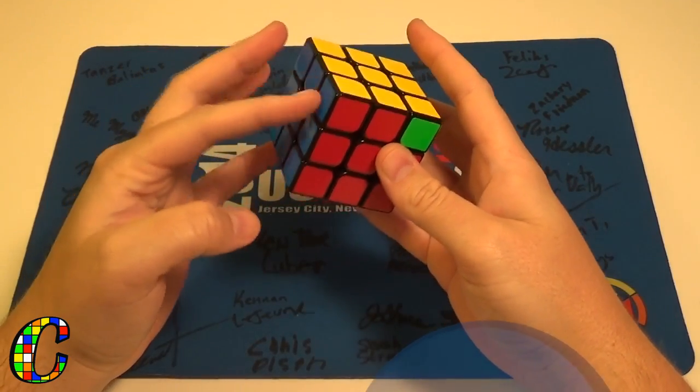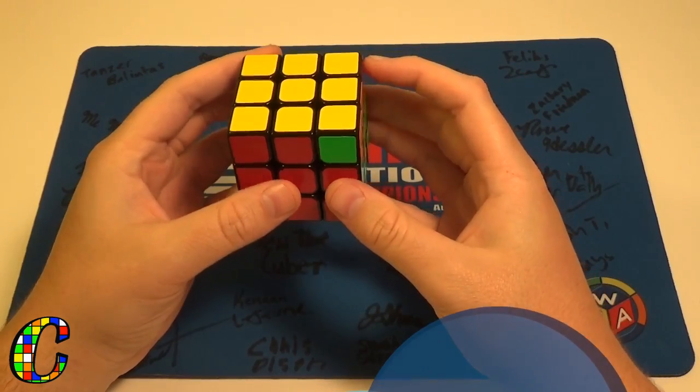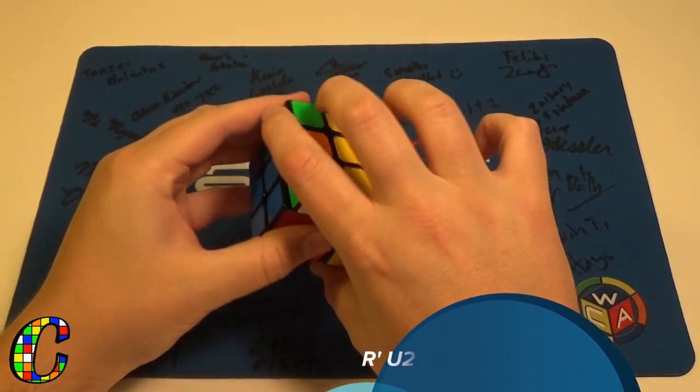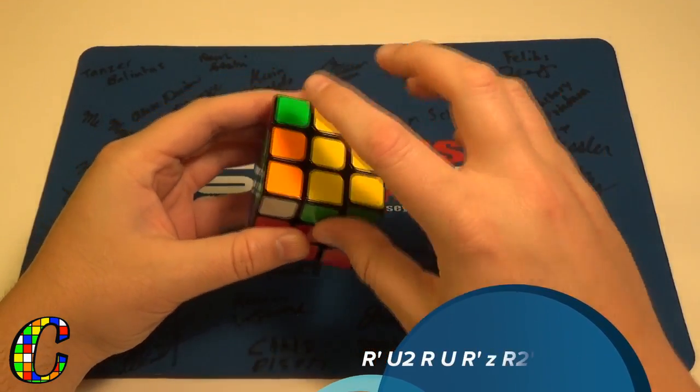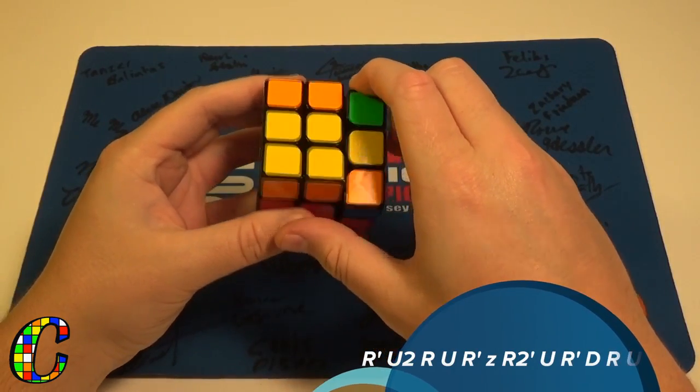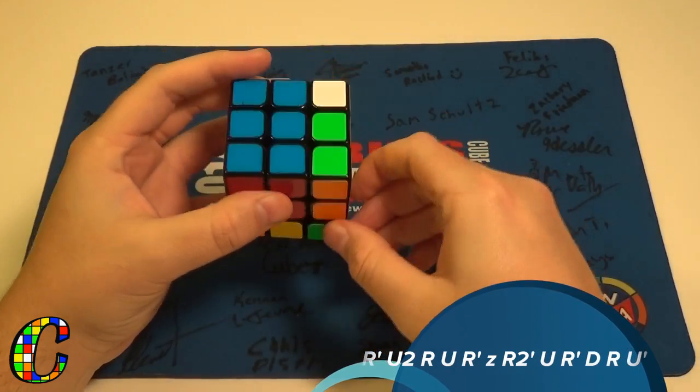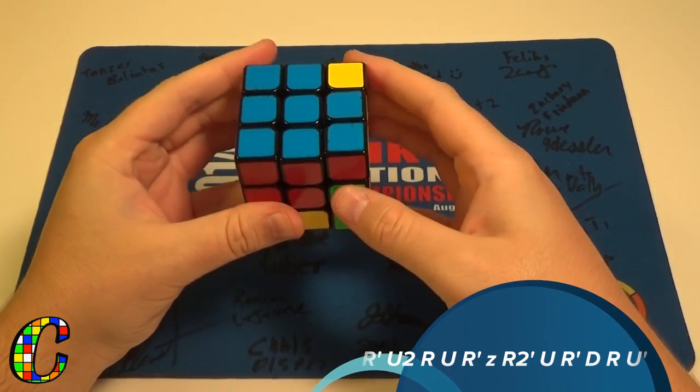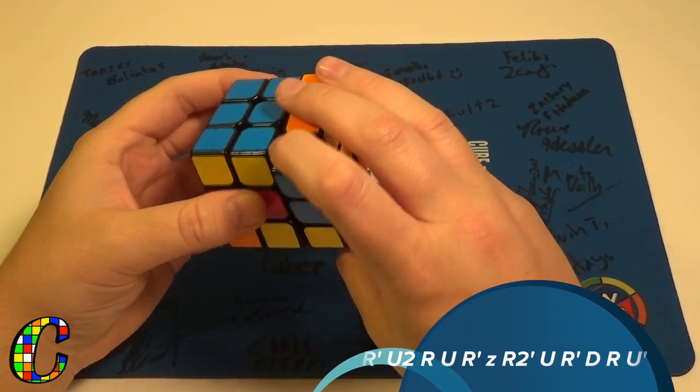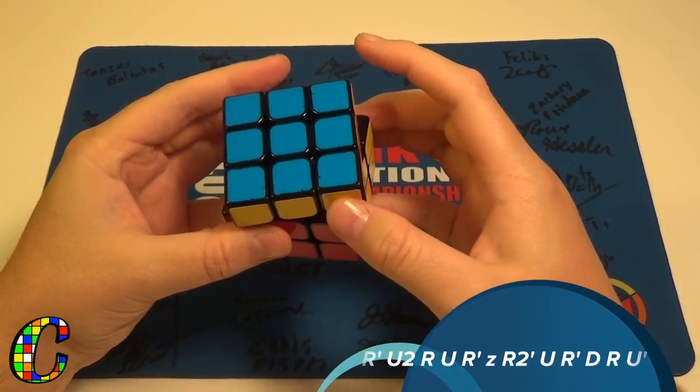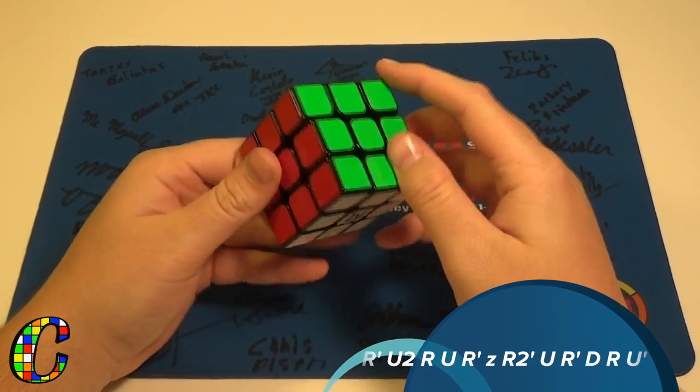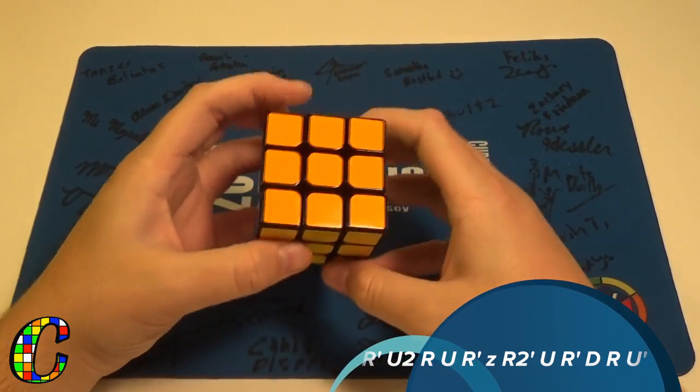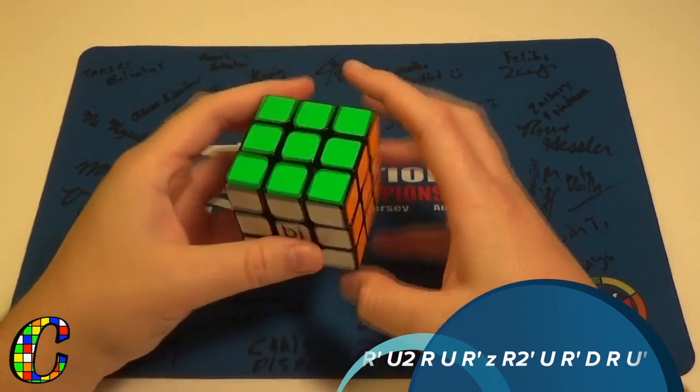What you do for this case is, you put the 3x1 block on the right, you do R' U2 R U R' Z rotation R2' U R' D R U'. I know that looks pretty complicated, but it's actually really simple.